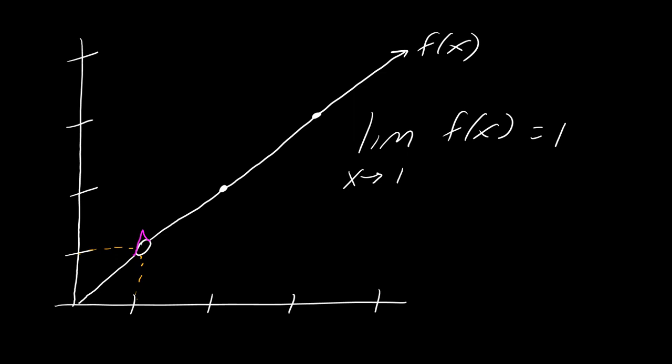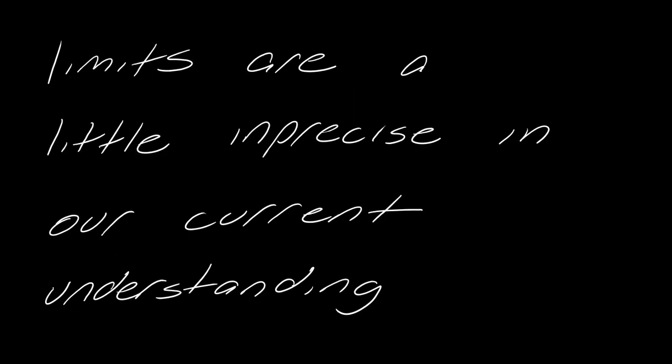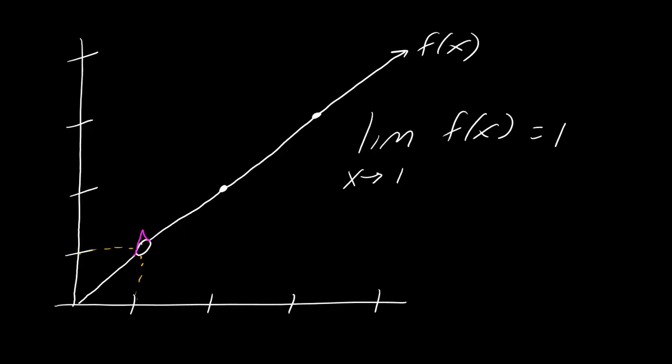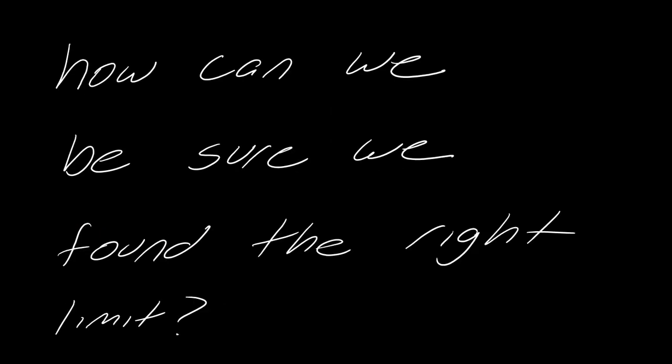Then that would totally change the limit. Philosophically, this was actually a big argument in the history of mathematics. This is the idea that limits are a little imprecise in our current understanding. It's not good enough to say it looks like it's going to that. So what we want to do is ask: how can we be sure we found the right limit?